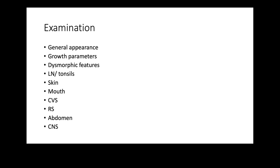On examination, look at general appearance, growth parameters, and perform a thorough systemic examination. One important thing is dysmorphic features. Lymph nodes and tonsils are critical — some of the most serious immune deficiencies, like X-linked agammaglobulinemia and SCID, will not have lymph nodes or tonsils. Dysmorphic features are seen in several primary immunodeficiencies.